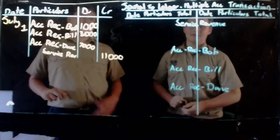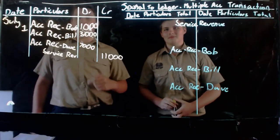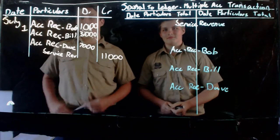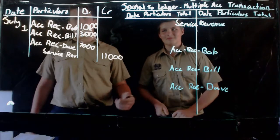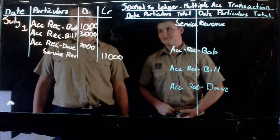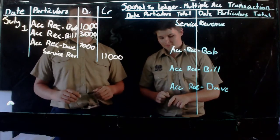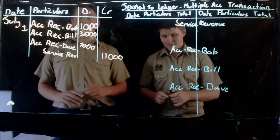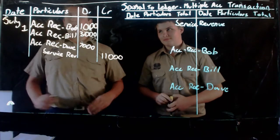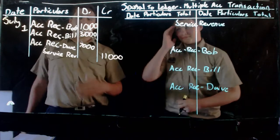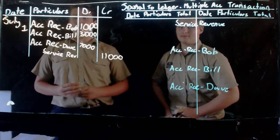Today we're going to be learning how to post our journal to our ledger when we have multiple transactions. This question comes up when a business performs a service for Bob, Bill, and Dave, who are all trusted customers and will all pay at the end of the month. Because there are three accounts receivable, they all need to have corresponding transactions in the service revenue account.